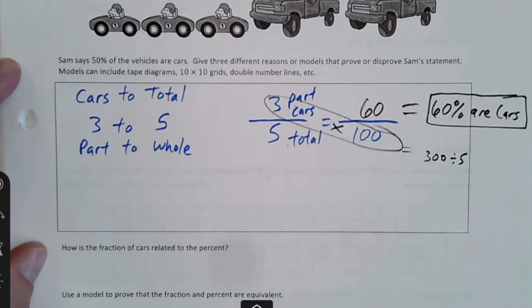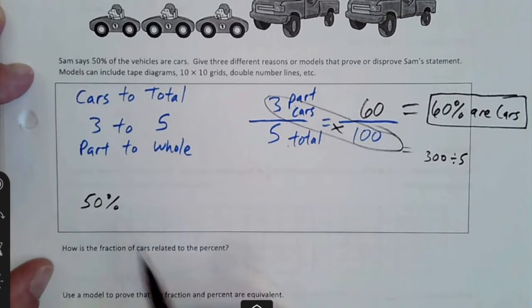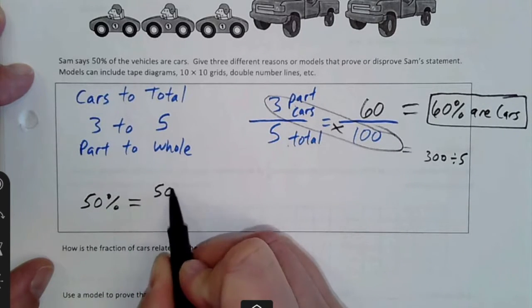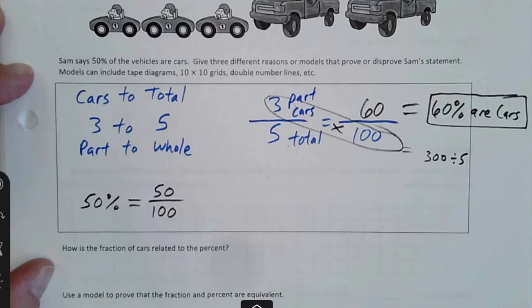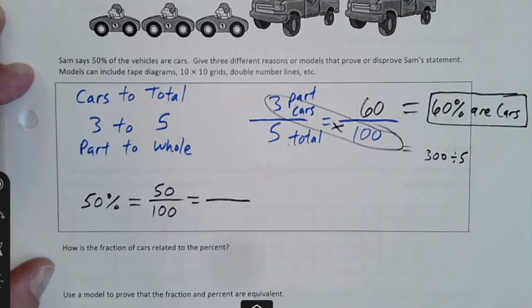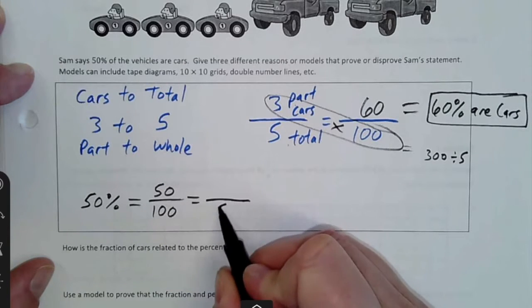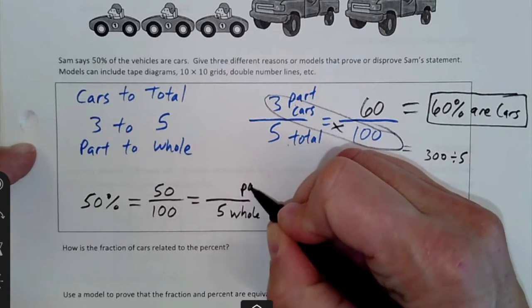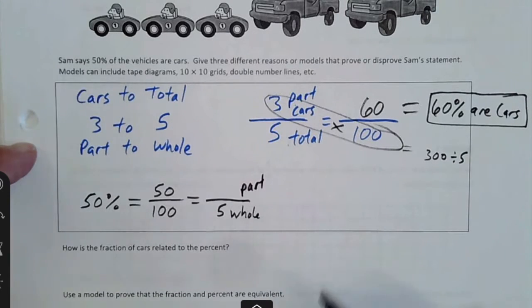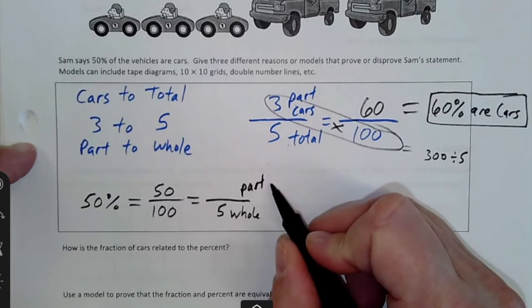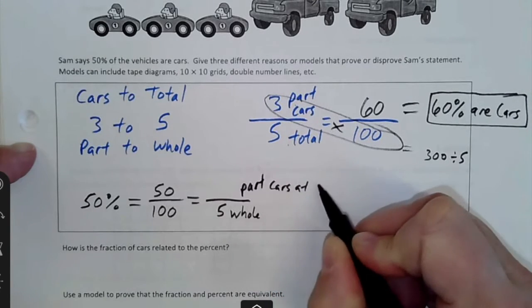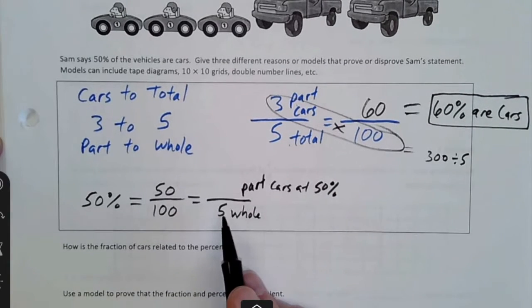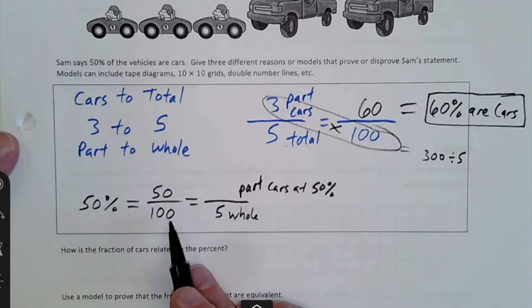Another way to show that, if he wanted 50% to be cars as a fraction, we know 50% would be 50 out of 100, because percents are always out of 100. And then, if we know that the whole amount of vehicles was five, that's how many total or whole vehicles are there, then what would be the part that would have to be cars if we wanted exactly 50%.